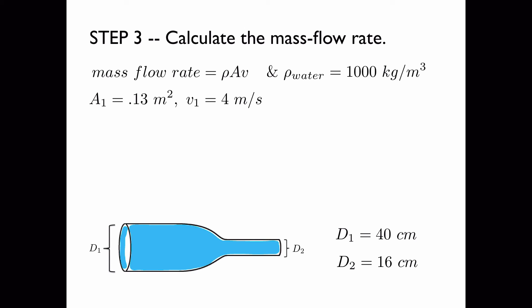We have the area and the velocity. Now remember that which area and velocity we use doesn't matter as long as we use it for the same region, because the product of the area and the velocity is constant.